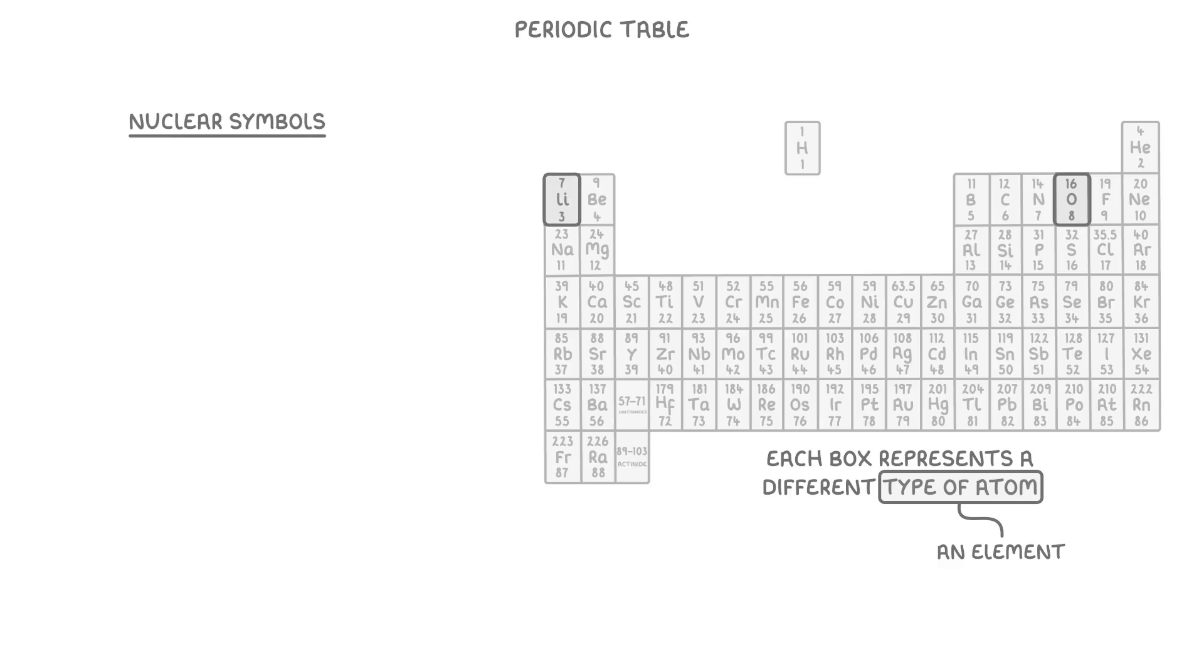We call these boxes nucleus symbols, and they tell us a whole bunch of information about the element. To see exactly what they tell us, let's take a look at the nucleus symbols of oxygen and lithium.